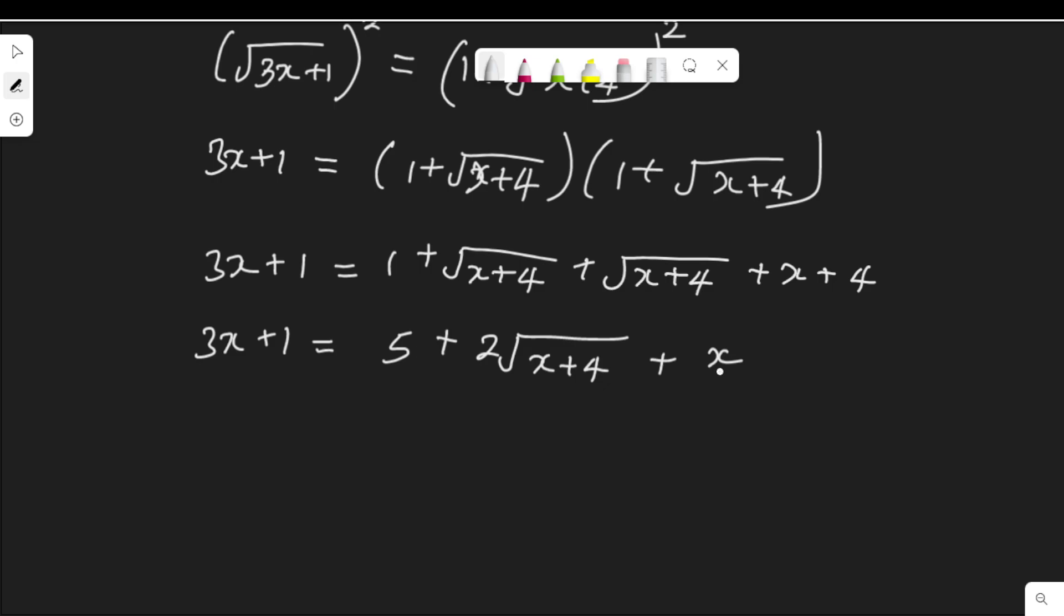Now, collecting like terms. This x, I'll move it to the left-hand side. When it crosses equality, it becomes minus. I have 3x - x + 1. Again, this 5, taking it to the left-hand side, becomes minus 5, equal to 2√(x+4).